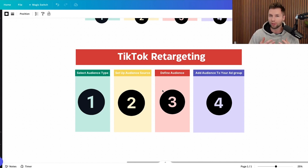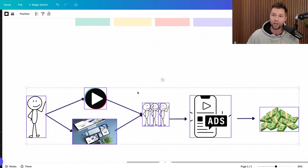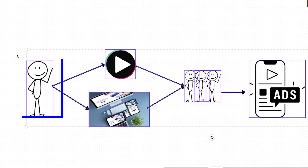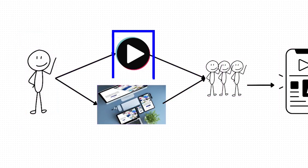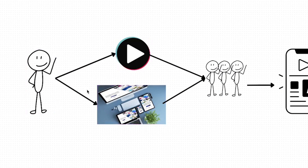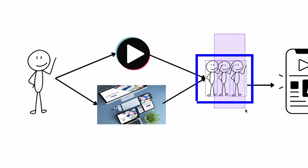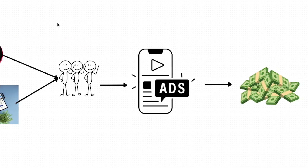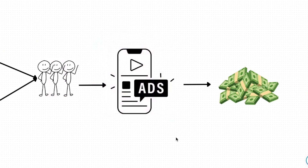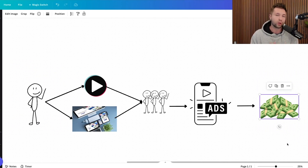Before we jump in, I want to briefly go over what TikTok retargeting is. In simple terms, let's say I go to either see one of your TikToks on your profile or visit your website. What we're doing with this strategy is taking data from everybody who came to our website, visited our TikTok profile, or another data source, and putting them all in a bucket — people who are aware of our business. We then show ads to these people, and because they're familiar with your business, they typically have a higher return on ad spend.